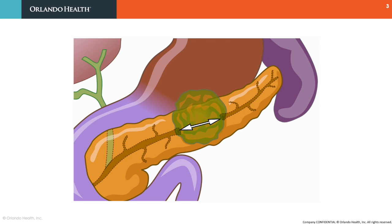In DPDS, which is seen in around 50% of patients with necrotizing pancreatitis, there is a complete transection of the pancreatic duct, resulting in a viable portion of the upstream pancreatic parenchyma becoming disconnected from the main pancreatic duct downstream. With no path for drainage of pancreatic juice, patients develop recurrent fluid collections that can become symptomatic, as seen in our patient.